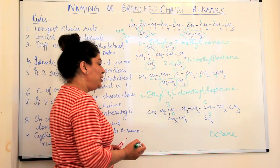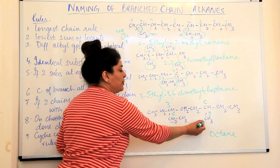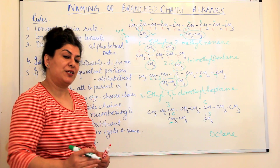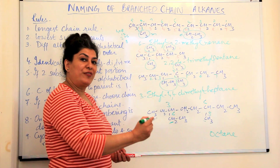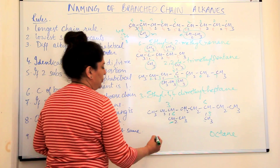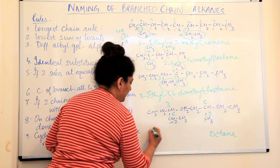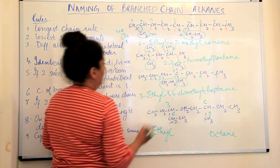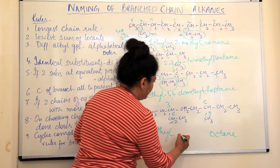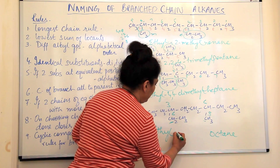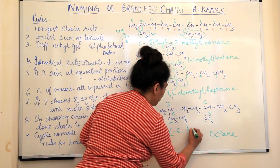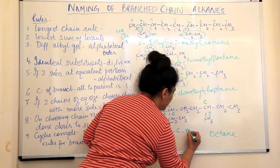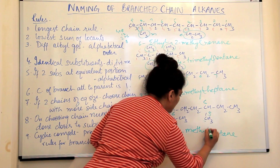When substituents are at equivalent positions, we give the lower locant to the substituent that comes first alphabetically. Ethyl comes before methyl, therefore ethyl should get the lower locant. We count from the side that gives ethyl the lower locant. The name of this compound is 3-ethyl-6-methyloctane.